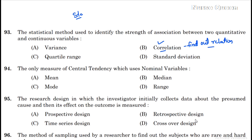We have dependent variables and independent variables, and they are not the same. For example, you can identify meditation or depression, and that is how you can identify the variation between variables. That is what correlation identifies — the difference between two variables.